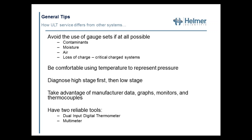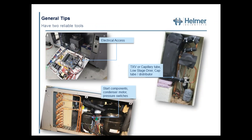When you open up a unit, you're going to see an electrical panel and electrical access. Make sure you have adequate room to get in and do your troubleshooting. We're going to talk about the TXV or capillary tube, where it sits, and how they interact with each other. Some will have a distributor associated with it, some will not. You're also going to look at start components, condenser motors, and pressure switches — make sure you have access to those when doing your troubleshooting.